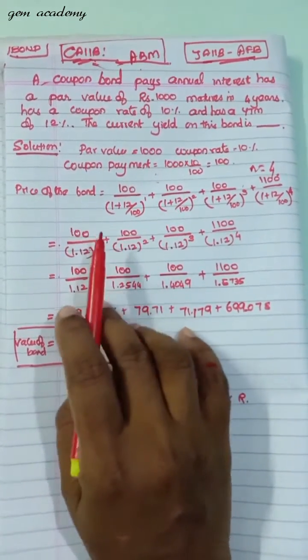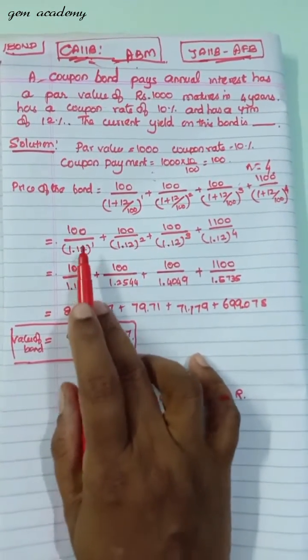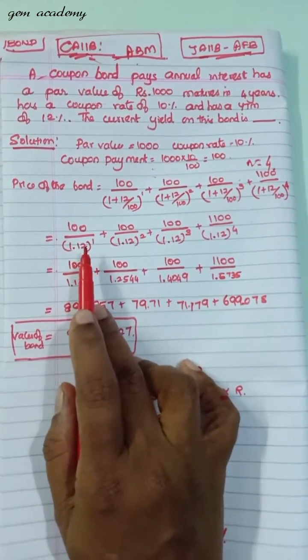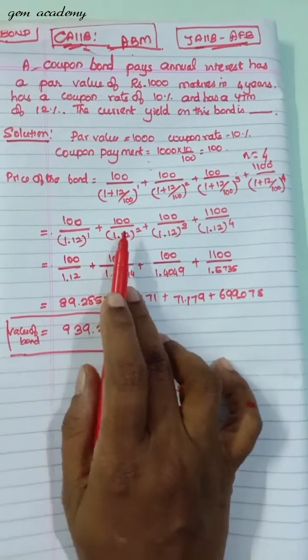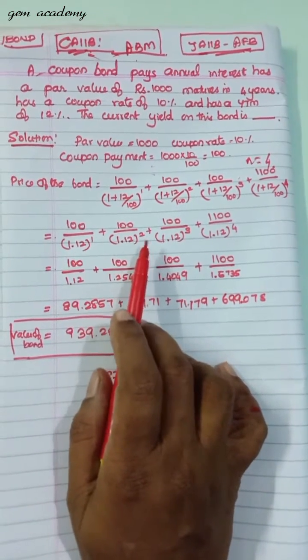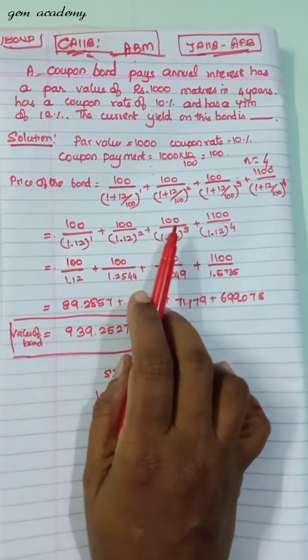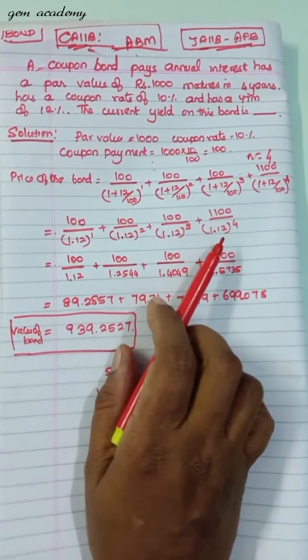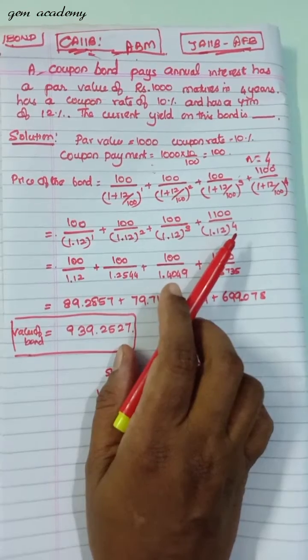By solving this, I'm getting 100/1.12 (1 plus 12/100 is 1.12) to the power 1, plus 100/(1+12/100)^2, plus 100/(1.12)^3, plus 1100/(1.12)^4.